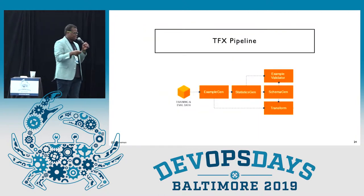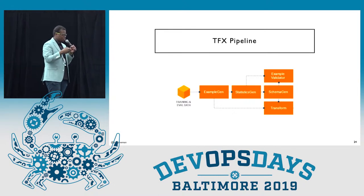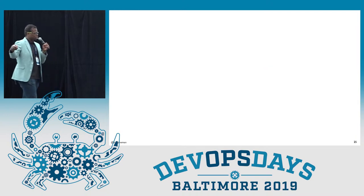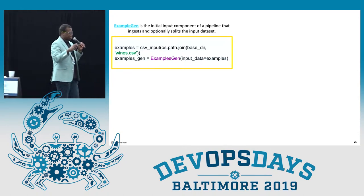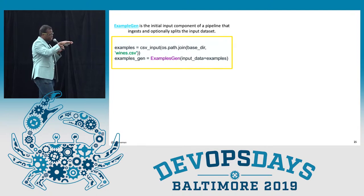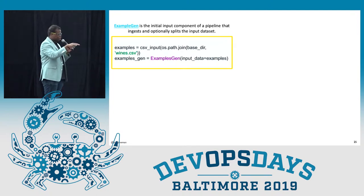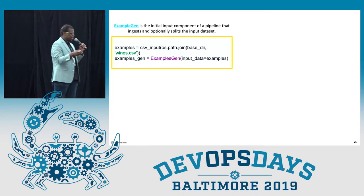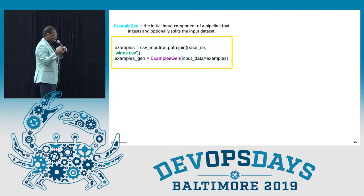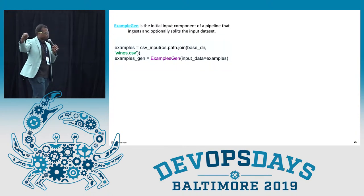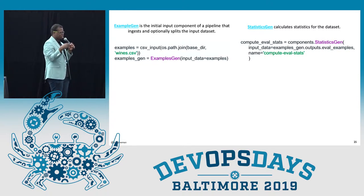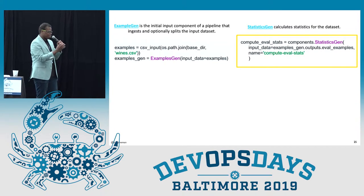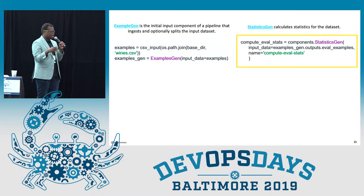Another tool, TFX, uses TensorFlow to encapsulate all this stuff in code. The example generator in the TFX pipeline allows you to ingest where your data is coming from and sets up the initial pipeline — it can give you a random set of rows from that CSV file. The next one is the statistics generator, which allows you to see how your data is laid out: what's the mean average of certain fields, how many of a field came in, what's the most popular. So it gives you knowledge about your data.